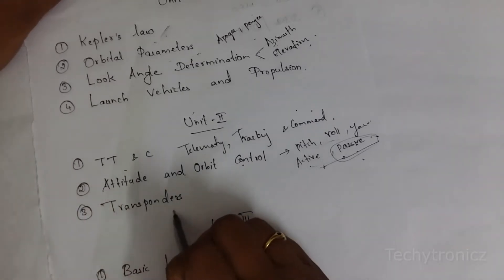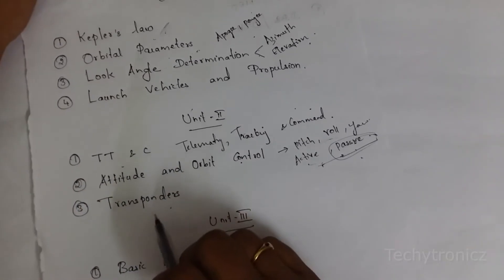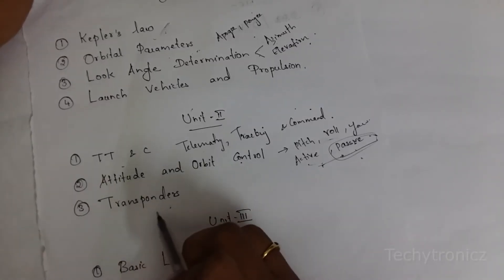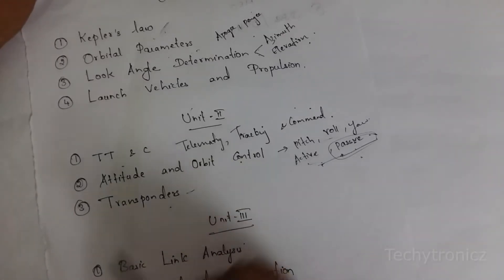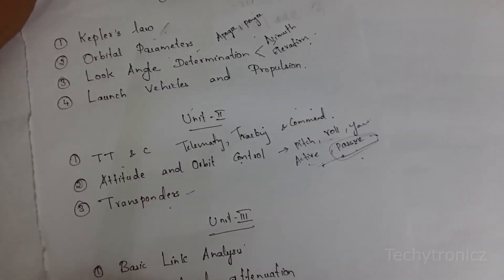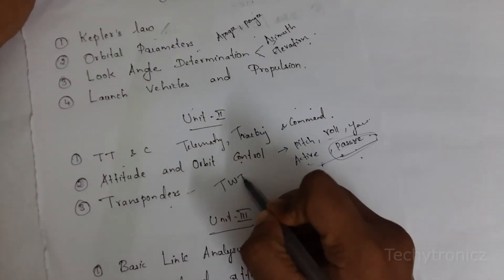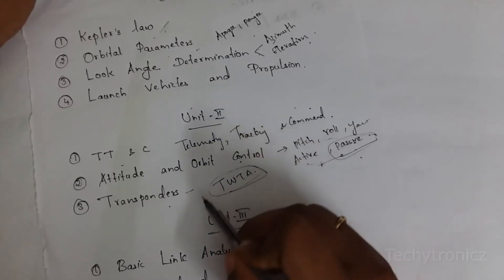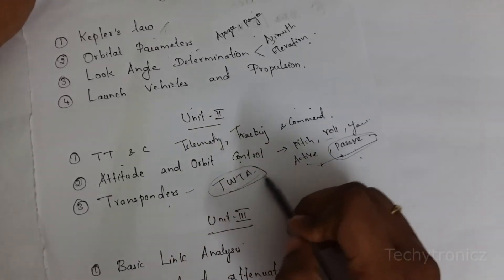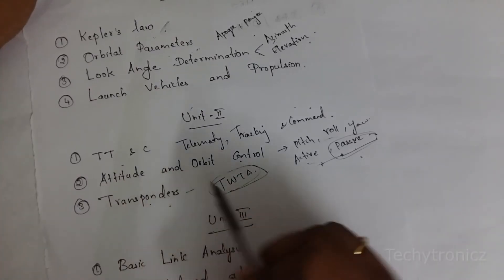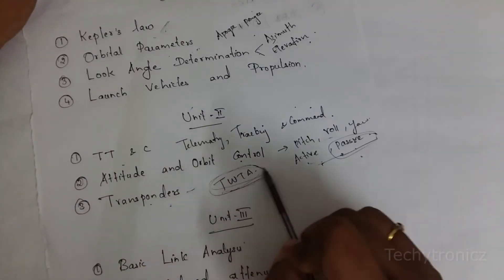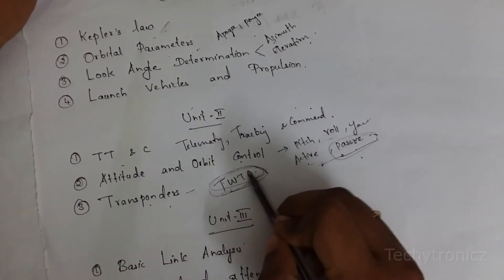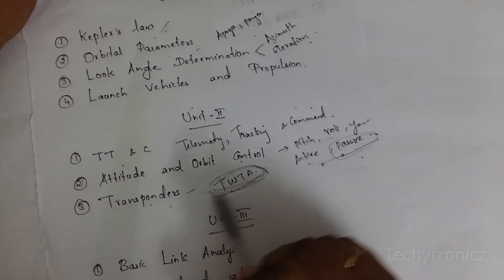The third important question is transponders. A transponder is a device used in satellites. It includes one block diagram and has a TWT — that is a traveling wave tube amplifier. By drawing the diagram you have to explain about transponders and the amplifier used in the transponder. Sometimes they will ask about the traveling wave tube amplifier separately.